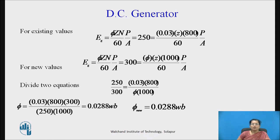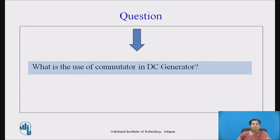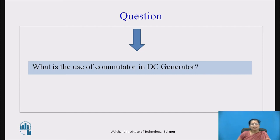Now pause the video and think about this question: What is the use of a commutator in a DC generator? Generally, the commutator is used to convert AC into DC. So the commutator works as a mechanical rectifier to convert alternating current to DC current in a generator. That is the answer for this question.